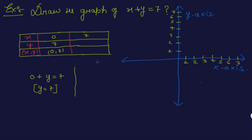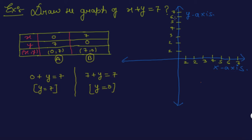Now take the value of x equal to 7. Put the value of x in the given equation: 7 plus y equal to 7, which gives y equal to 0. So the ordered pair is (7, 0). Now these two points, (0, 7) and (7, 0), are plotted on the coordinate plane.